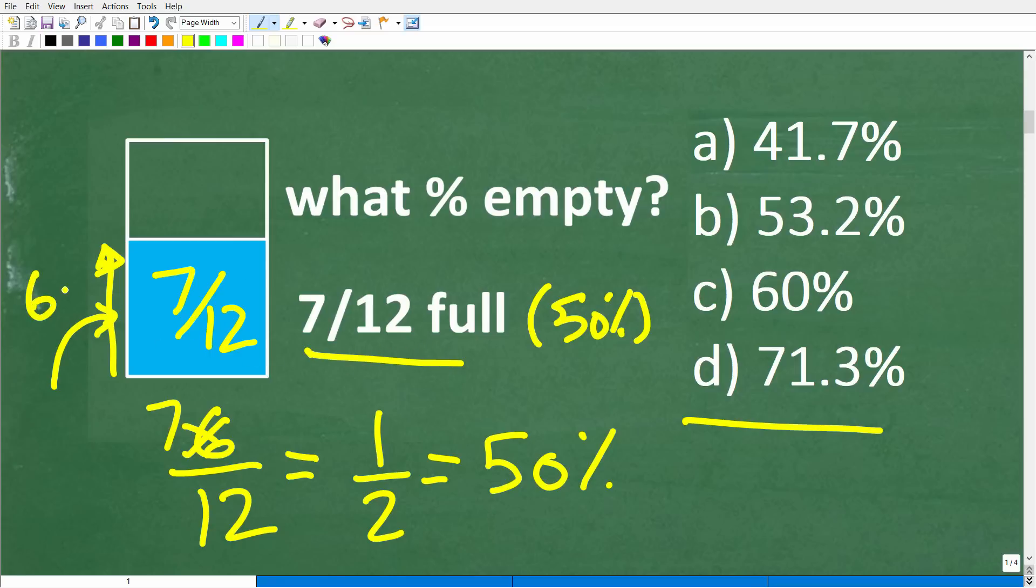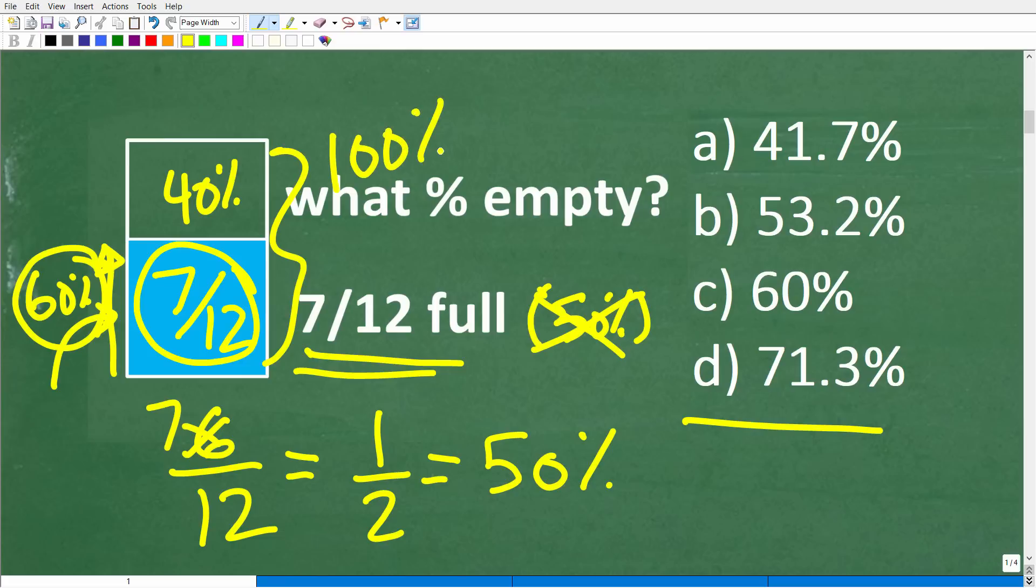So 6/12 would be 50%. But this cup has more than 6/12. Matter of fact, it has 7/12. So it has a higher percentage than 50% being full, right? So in other words, maybe it's like 60%. We just know that 7/12 represents a percentage that's higher than 50%. So let's just use an easy number. Let's suppose it's like maybe 60%. Well, if it was 60% full, then this would be 40% empty, right?